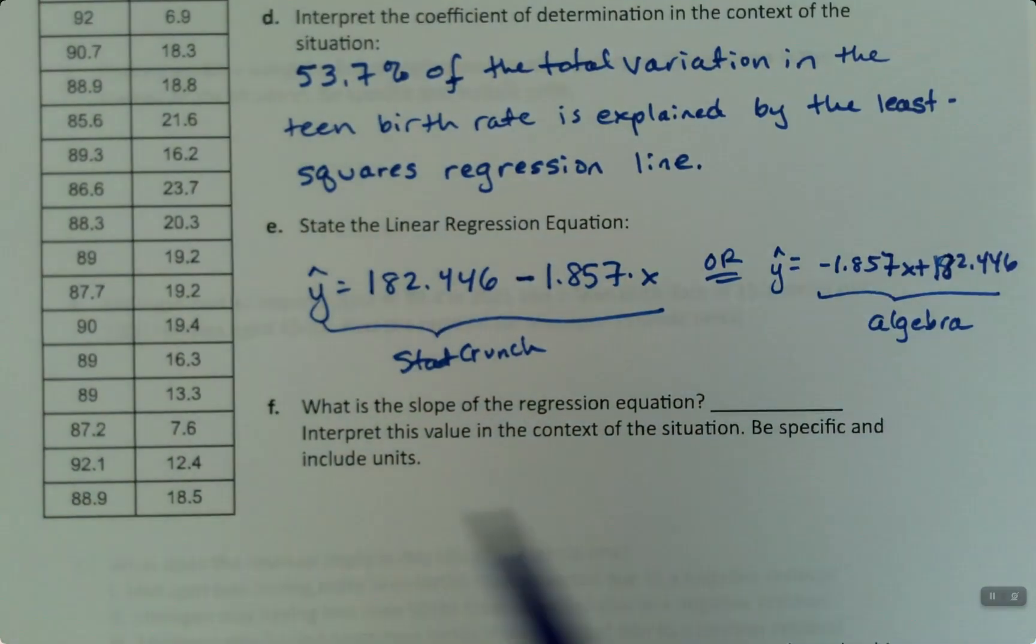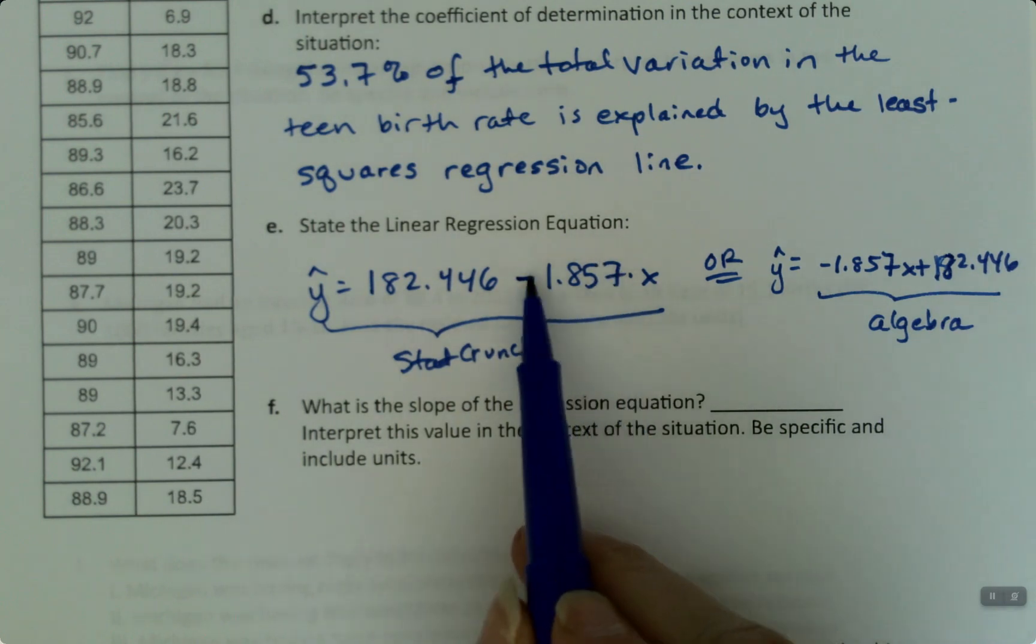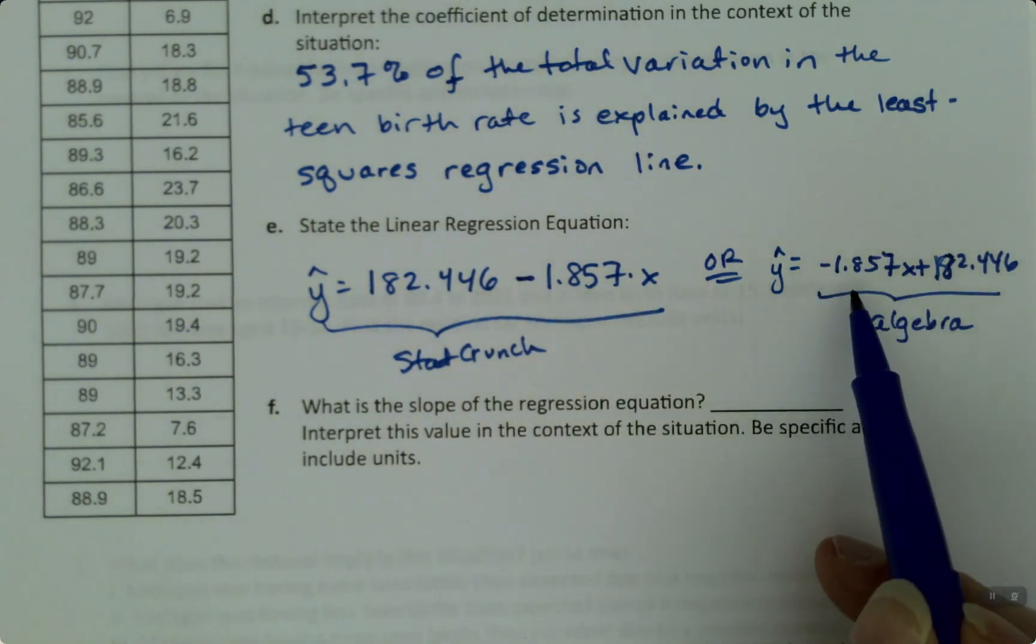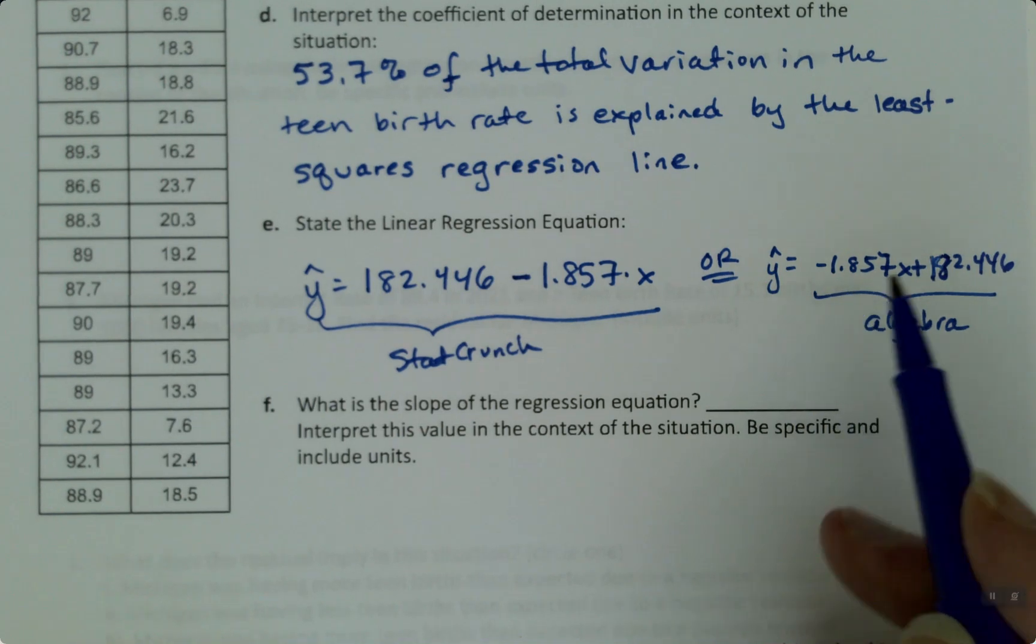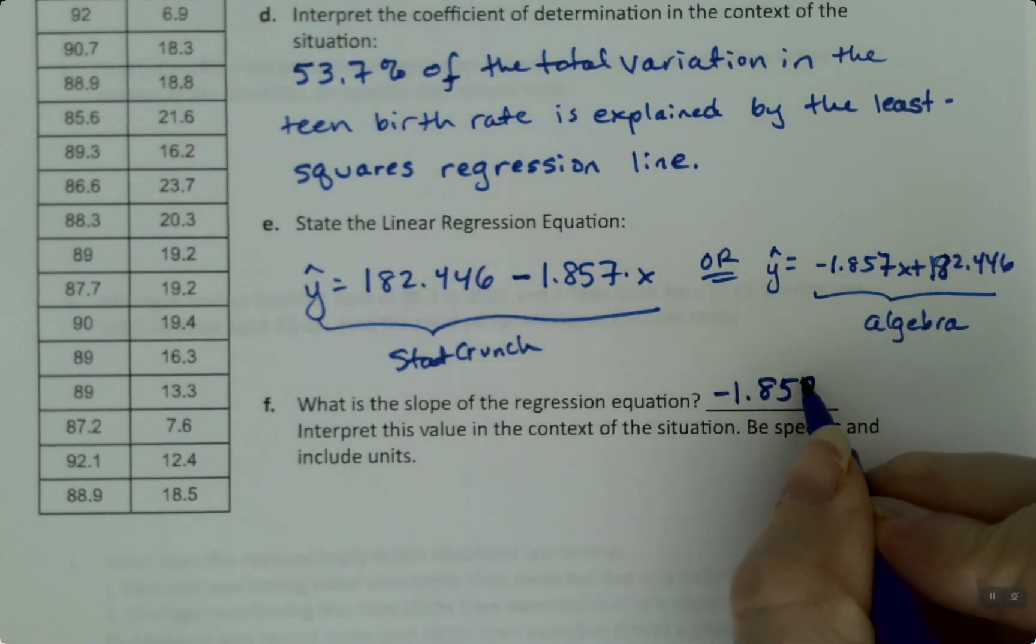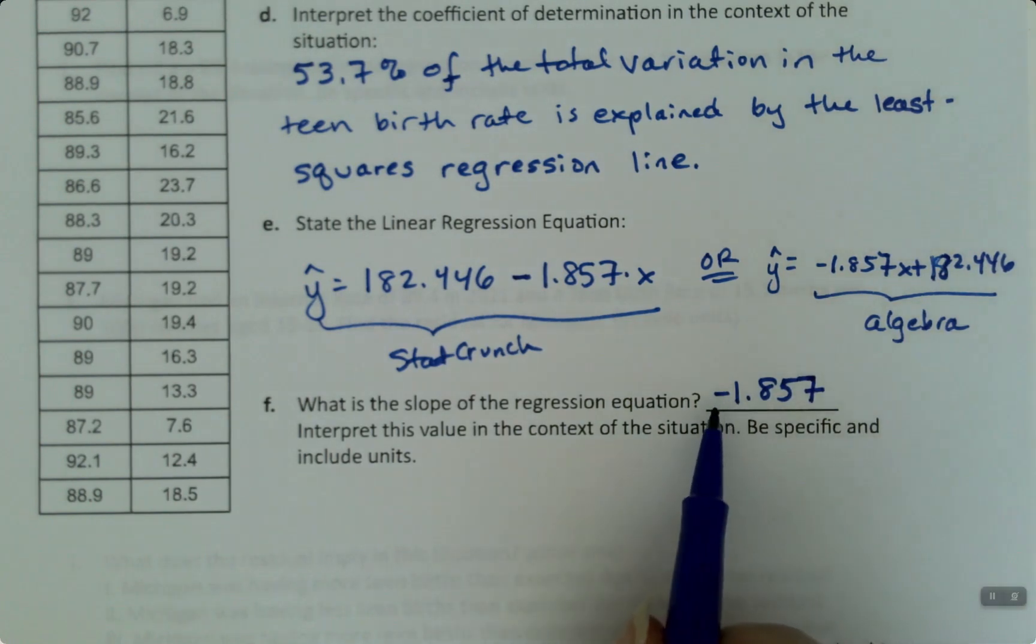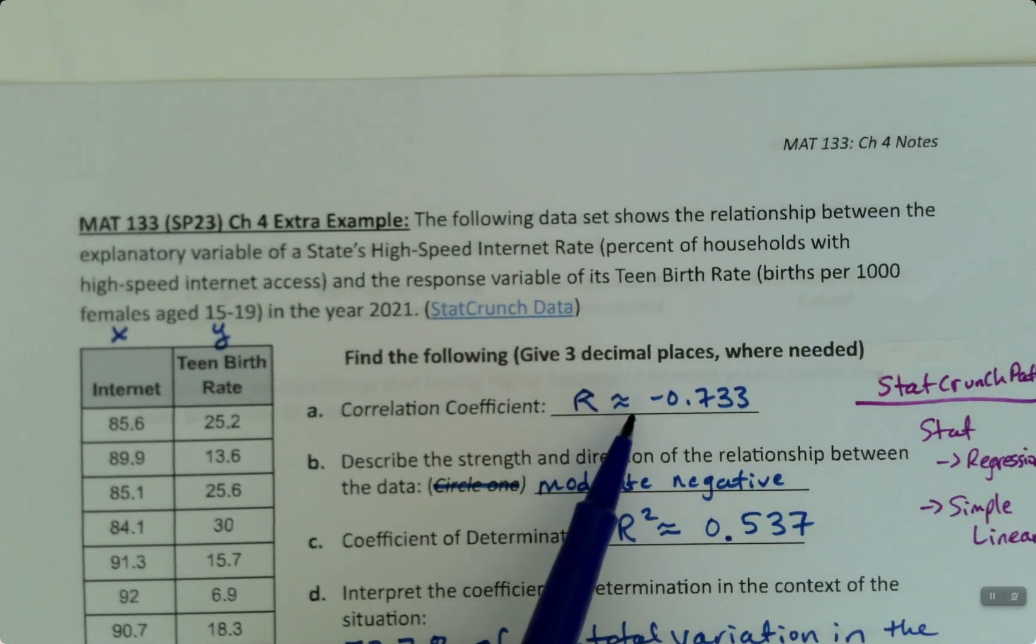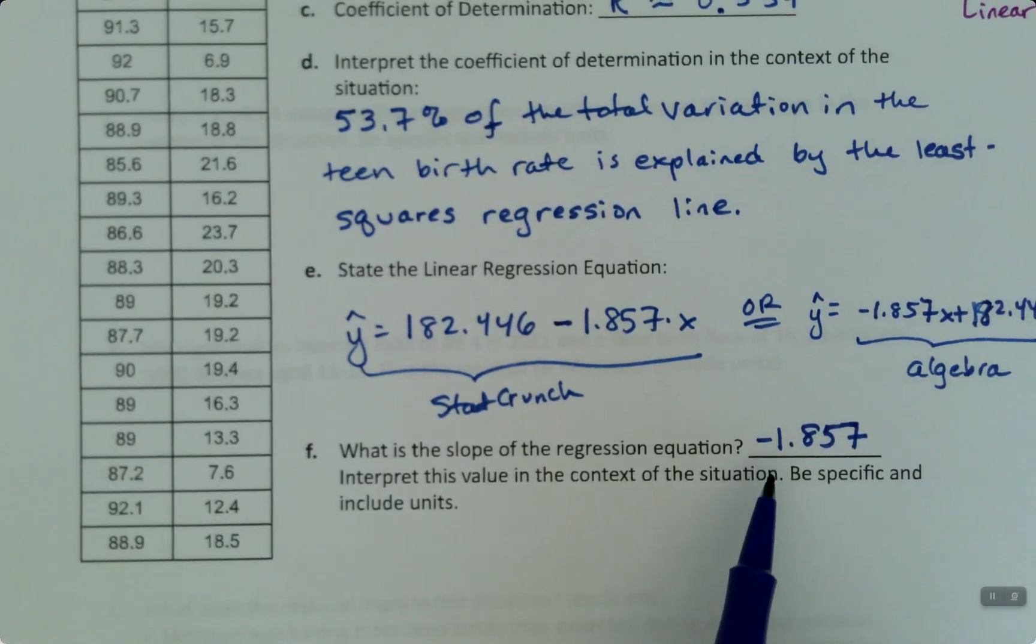Now, what is the slope? Well, the slope is always the one that's with the x. It's right here. That one that's with the x. With your x variable. So, that's negative 1.857. Notice that its sign, which is negative, matches the sign of the r. Those have to go together. If r is negative, slope is negative, and vice versa.